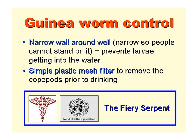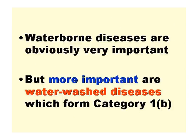So how do we control guinea worm transmission? The best way is to build a narrow wall around the well — it has to be narrow so that people can't stand on it — and this prevents the larvae from getting into the water. Alternatively, or also in addition, people can use a simple plastic mesh filter to remove the copepods prior to drinking the water. Waterborne diseases are very important, but especially in developing countries, much more important are the water-washed diseases, which form category 1B of our unitary environmental classification.